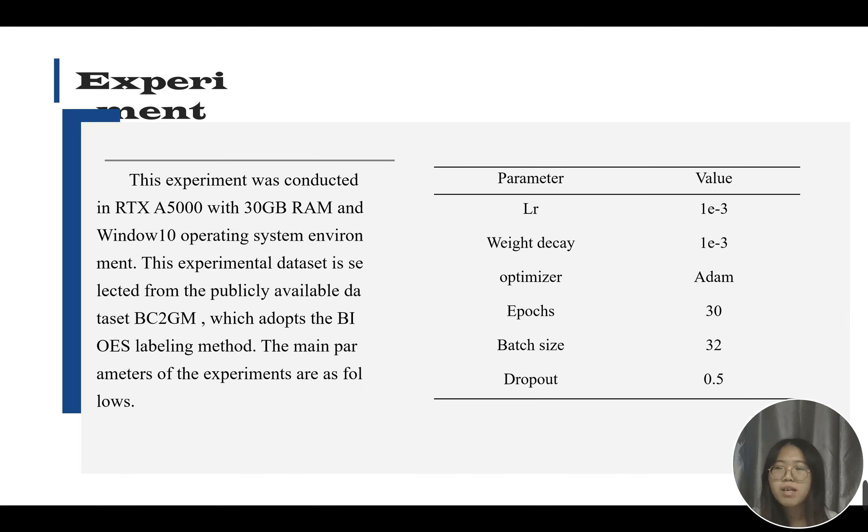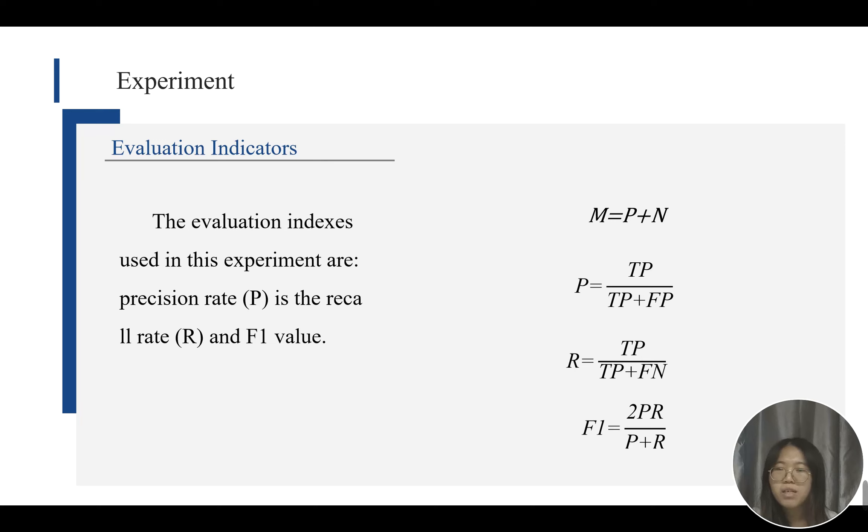This experiment was conducted in RTX A5000 with 30 GB RAM and Windows 10 operating system environment. The experimental dataset is selected from the publicly available dataset BC2GM, which adopts the BIOS labeling method. The main parameters of the experiments are as follows. The evaluation metrics used in this experiment are precision rate, recall rate, and F1 value.